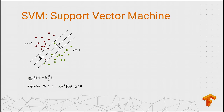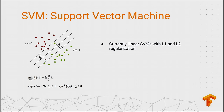Next, we have SVMs. These work by finding a decision boundary that maximizes a margin. We are working with soft margin methods using a hinge loss, and the current implementation is linear SVMs with L1 and L2 regularization. SVMs become much more powerful with a non-linear kernel, which allows a much more complicated decision boundary, so we are working on providing non-linear kernels using the kernel approximation trick.